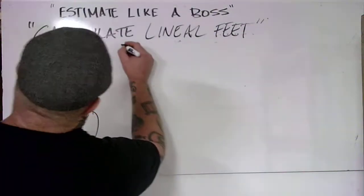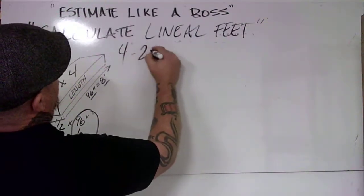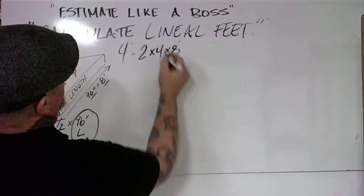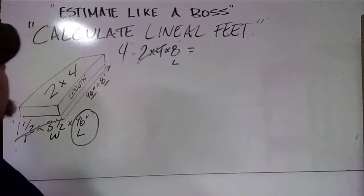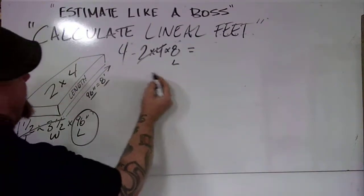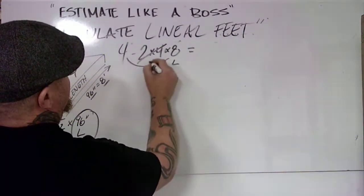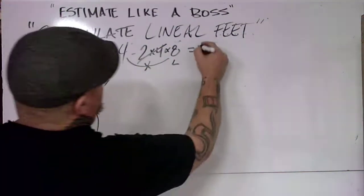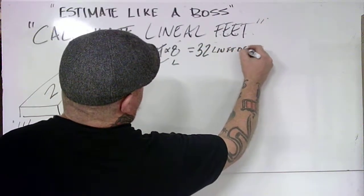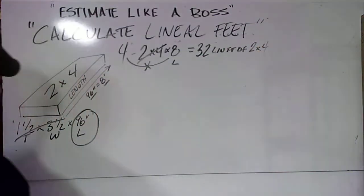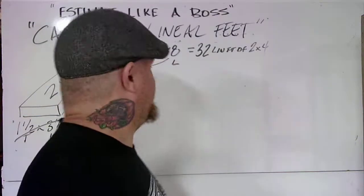If we go in the back and grab four 2x4s that measure 2x4 by 8, we're going to ignore the thickness and the width and focus on the length number, which is 8. If we have four 2x4s that measure 8 feet long, we simply multiply 4 times 8 equals 32. We have 32 linear feet of 2x4. It's not about the thickness or width, it's all about the length.